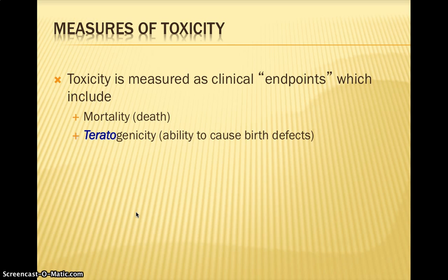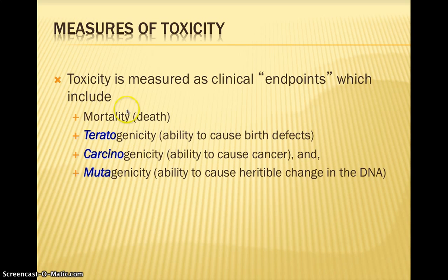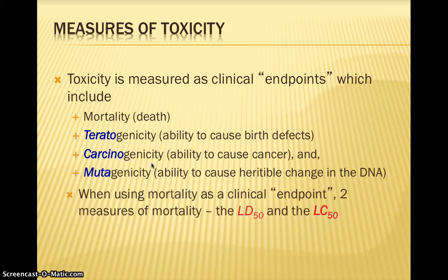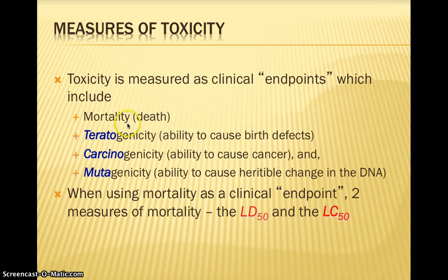Toxicity can be measured in a couple of different ways. We can measure how the toxicity level affects death — how many organisms are living or dying at different concentrations. We can measure how it affects birth defects (teratogenicity), carcinogenicity (ability to cause cancer), and mutagenicity (changes in DNA). In our brine shrimp lab, we're testing for death — are they living or dying? When we use mortality as our endpoint, we measure that with the LD50 or the LC50.